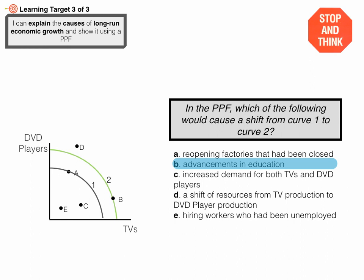D — a shift in resources from TV production to DVD player production — means we're just moving from one point along the curve to another point along the same curve. E — hiring workers who had been unemployed — those workers were available but just not being utilized. When they were unemployed we were inside the curve; hiring them moves us closer to the curve, but the production possibilities are the same. Whether 100 workers are being utilized or not, the possibilities don't change — only the actual output might differ.